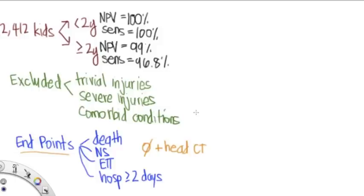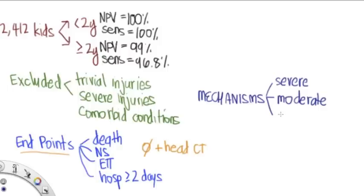Now let's talk about the different mechanisms of injury. And they broke them down into severe, moderate, and mild. A severe injury would be a motor vehicle crash when the patient was ejected, there was death of another passenger, or the car rolled over. Or a pedestrian or bicyclist not wearing a helmet was struck by a motorized vehicle. Falls of more than 1.5 meters, or that's 5 feet, in kids who are more than 2. And falls of 0.9 meters, or 3 feet, in those younger kids, those less than 2.